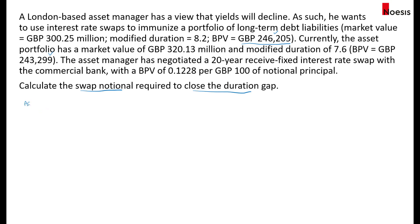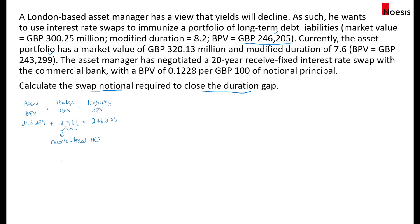Using the equation, we have the asset BPV plus the HBPV from the interest rate swap, and this should equal the liability BPV. The asset BPV is 243,299 and the liability BPV is 246,205, so the HBPV should equal 2,906 — a positive increase. A positive BPV refers to a received fixed interest rate swap. To recap: for a received fixed swap the BPV is positive, but for a pay fixed interest rate swap the BPV is negative.